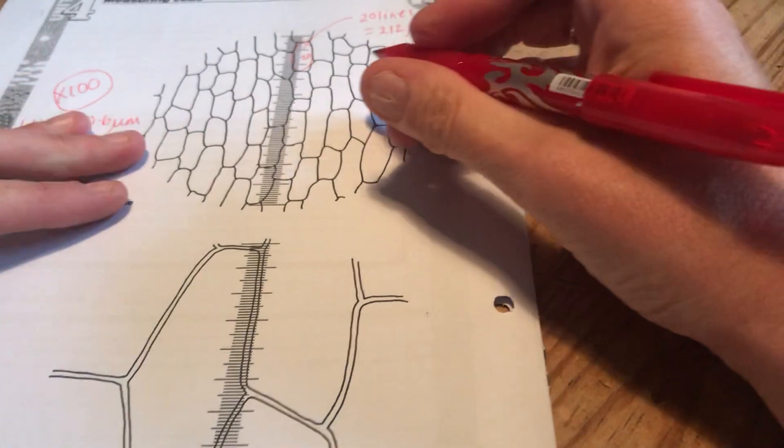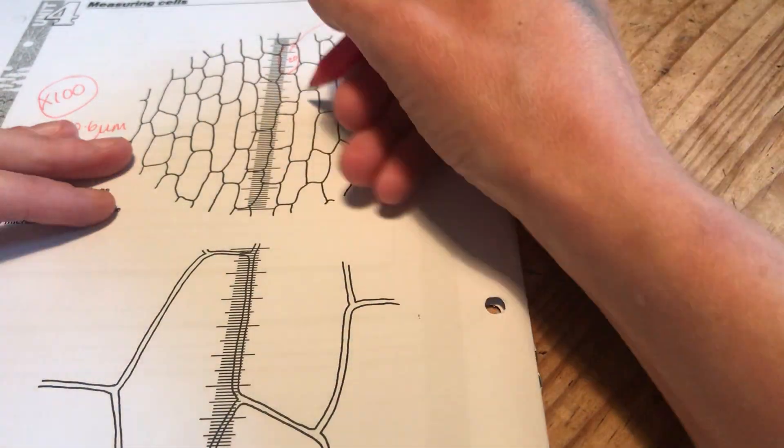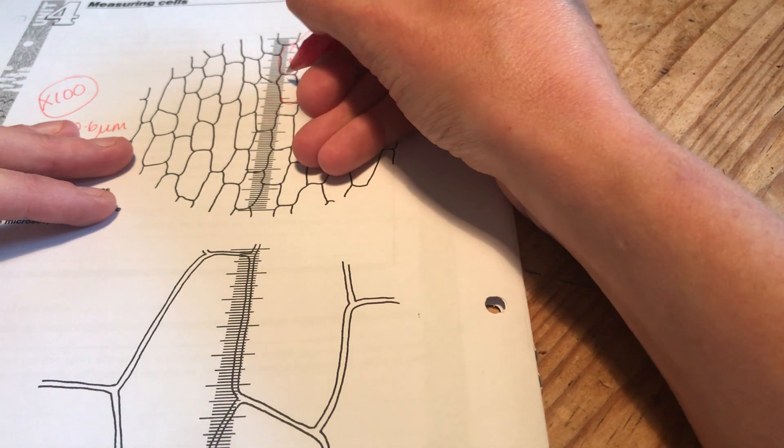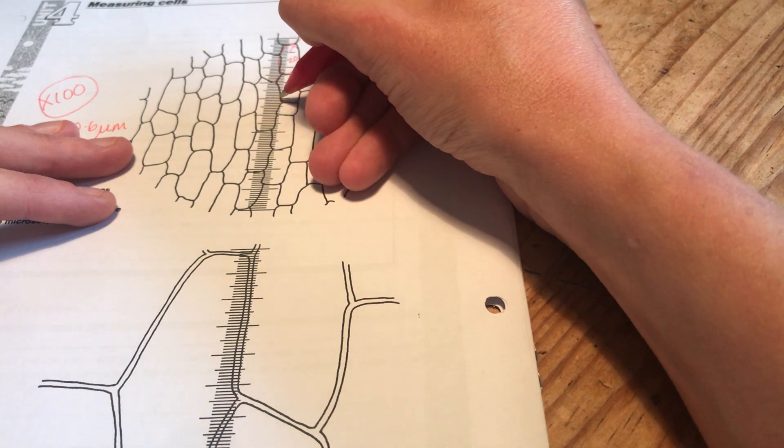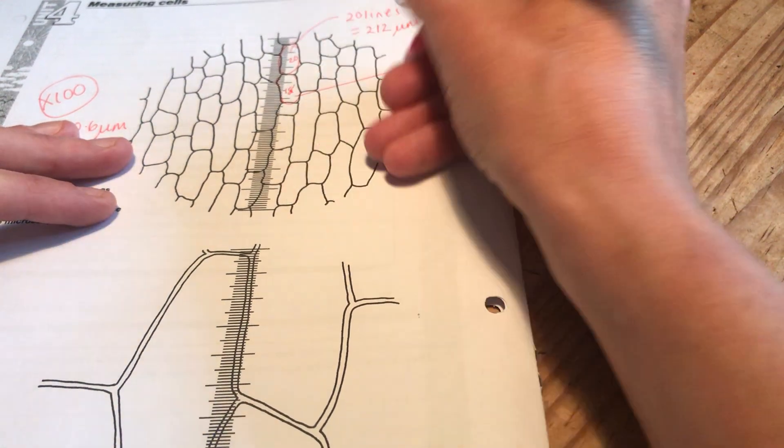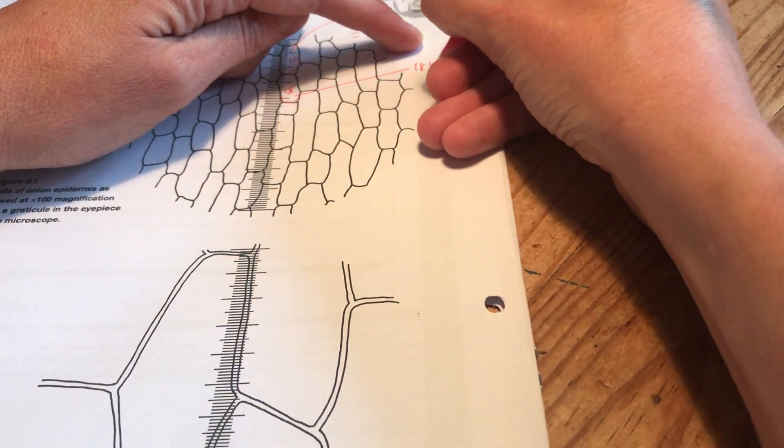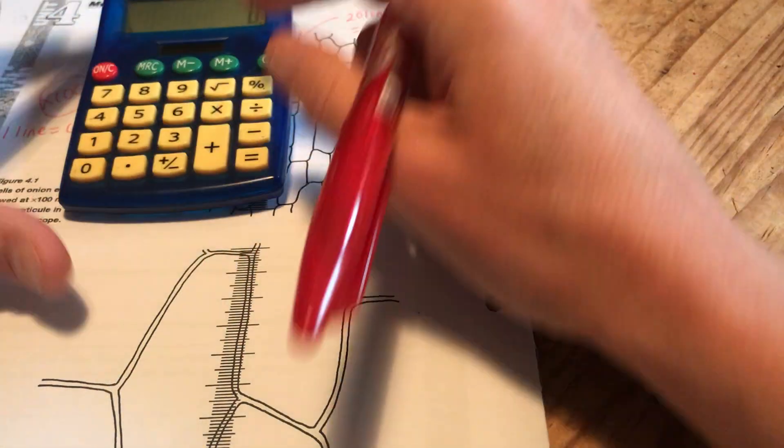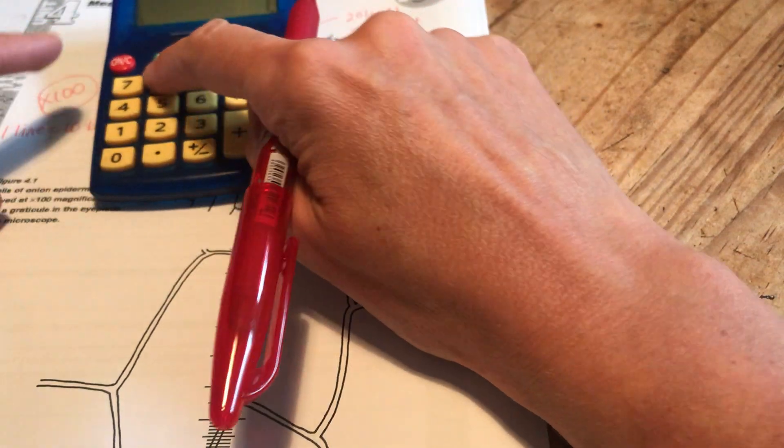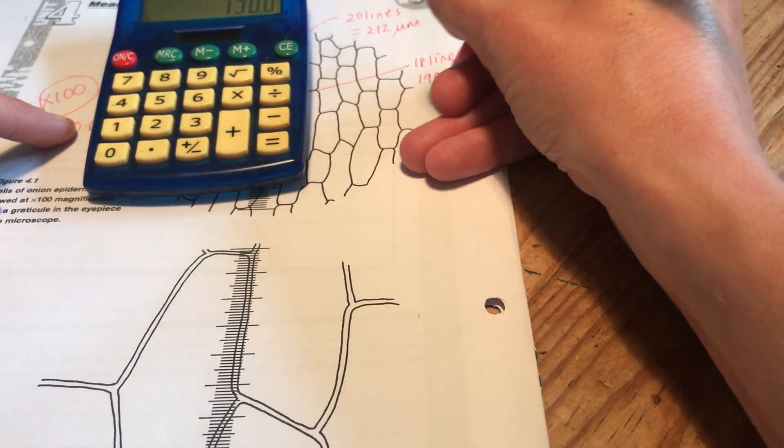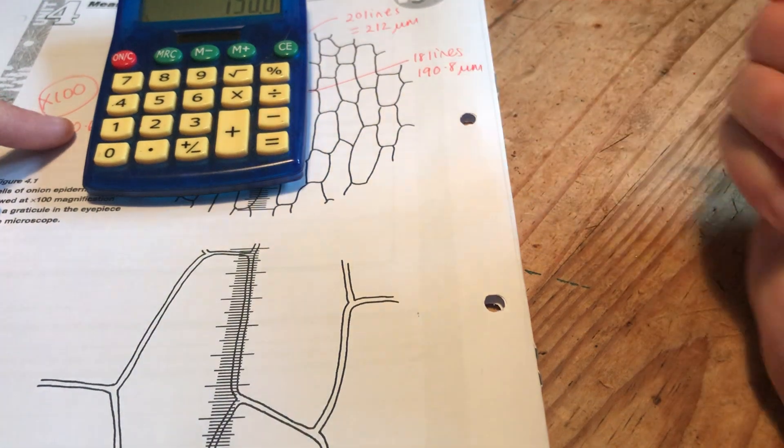I can just do 20 times 10.6 and I could say that cell there is worth 212 micrometers. It wants me to do a mean of a few doesn't it? So we could do the same with this one. This cell here. So that's 5, 10, 15, 16, 17, 18-ish lines. So this cell is 18 lines. I know that each line is worth 10.6. So 10.6 times 18, 190.8 micrometers. That's a slightly shorter one.